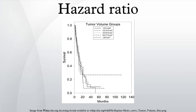Hazard ratios differ from relative risks in that the latter are cumulative over an entire study, using a defined endpoint, while the former represent instantaneous risk over the study time period, or some subset thereof. Hazard ratios suffer somewhat less from selection bias with respect to the endpoints chosen and can indicate risks that happened before the endpoint.